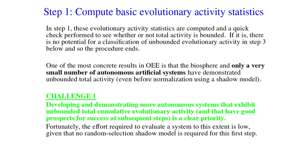In step one, these evolutionary activity statistics are computed and a quick check performed to see whether or not total activity is bounded. If it is, there is no potential for a classification of unbounded evolutionary activity in step three, and so the procedure ends. One of the most concrete results in open-ended evolution is that the biosphere and only a very small number of autonomous artificial systems have demonstrated unbounded total activity, even before normalisation using a shadow. This gives us our first challenge: developing and demonstrating more autonomous systems that exhibit unbounded total cumulative evolutionary activity.